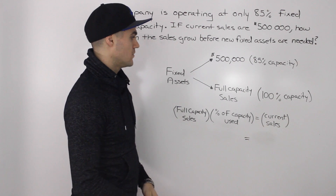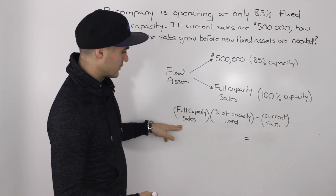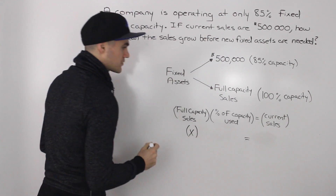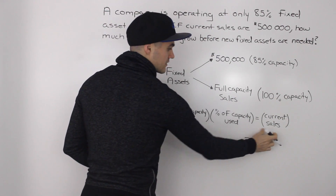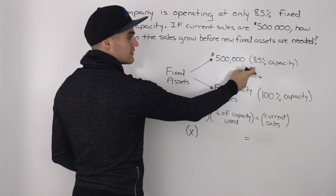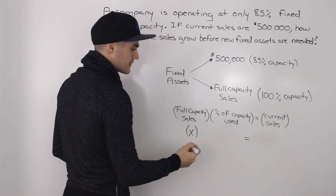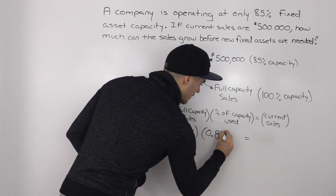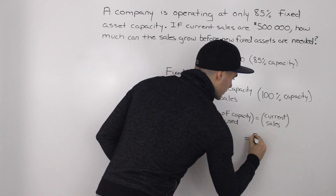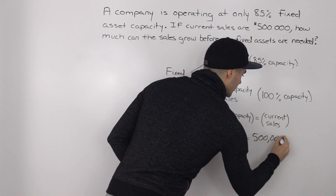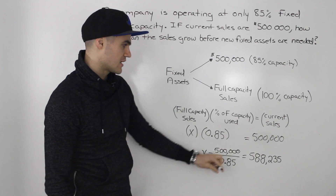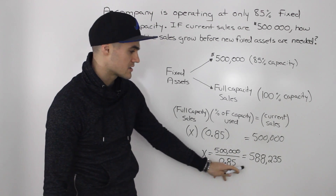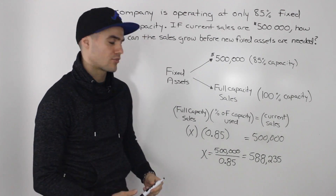Going back to our example, it's a little different because we're solving for the full capacity sales. So this bracket here, let's put an X variable for what we're solving for. We're given the current sales of $500,000 and we're given the capacity currently being used, which is 85%, or 0.85 in decimal form. So solving for X, we take 500,000 and divide it by 0.85, which gives us full capacity sales of $588,235.